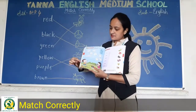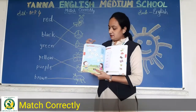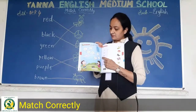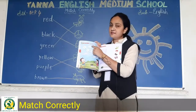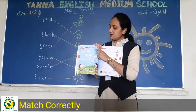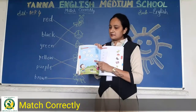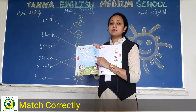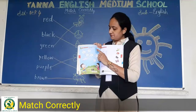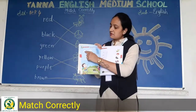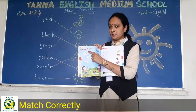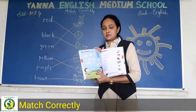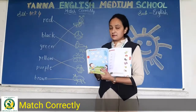Abhi dekho — page number 68 pe dekho. Yeh page number 68 aapka homework hai. Yaha pe kites di gai hai, aur kite ke andar numbers bhi hai — one, two, three, four, five, six, and seven. Aur yaha pe side me colors diye gaye hai: one me red, two me blue, three me orange, four me green, five me purple, six me yellow, aur seven me pink. Toh aapko isi hisaab se numbers ke according colors fill karna hai. Aachhi tarah se color karna — bilkul bahar nahi jaana chahiye.